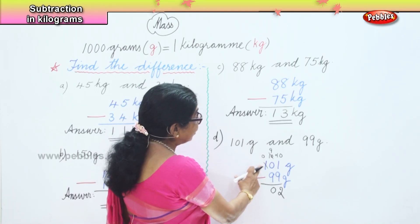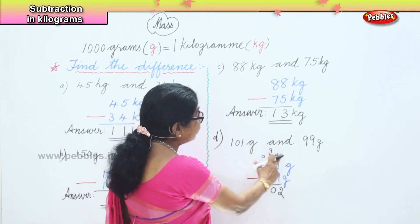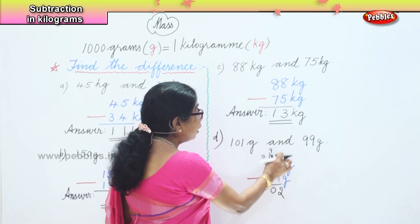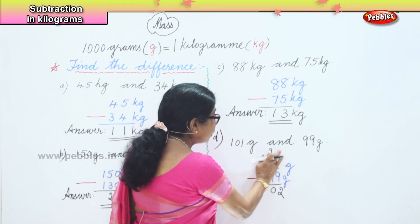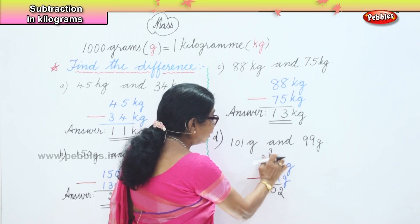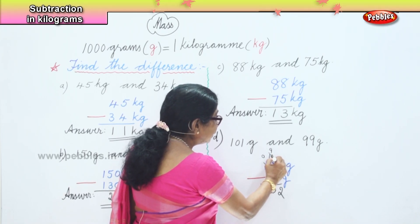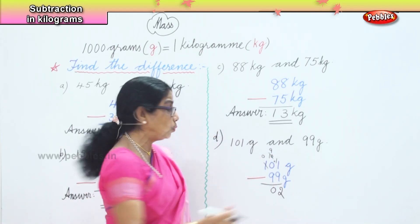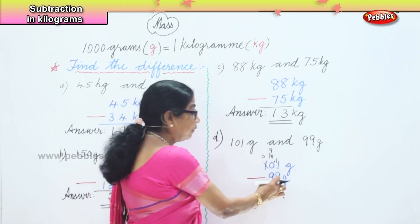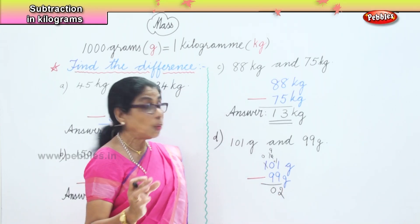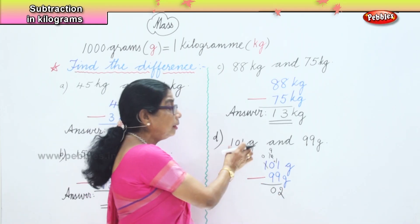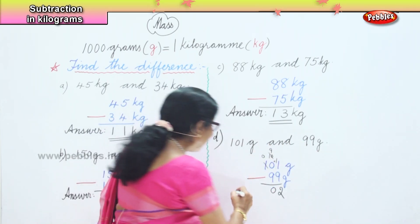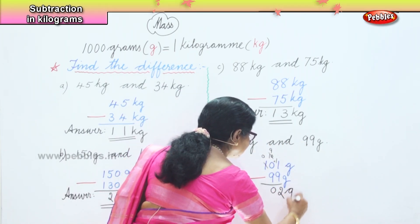We borrowed from each position: 10 plus 1 gives 11 in the ones place, 11 take away 9 is 2 grams, and 9 take away 9 is 0. So from 101 grams minus 99 grams, you get 2 grams — that's our answer.